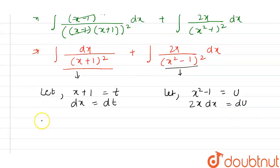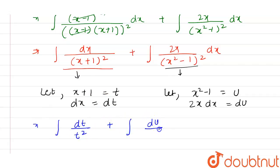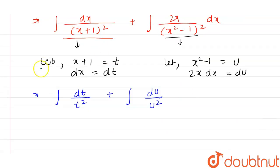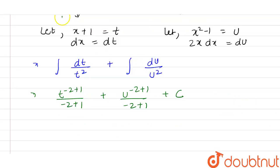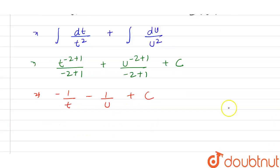So the question becomes integration of dt / t² plus integration of du / u². Integrating using the power rule, this equals t^(-2+1) / (-2+1) + u^(-2+1) / (-2+1) + c, which simplifies to -1/t - 1/u + c. Substituting back, t = x + 1 and u = x² - 1, giving us -1/(x + 1) - 1/(x² - 1) + c.